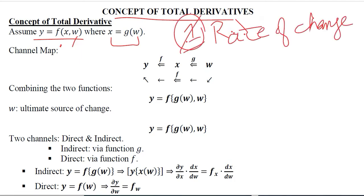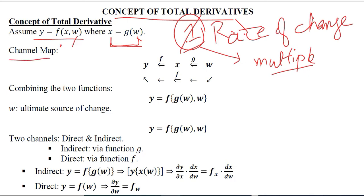There are multiple rates of change. In this case there are two of them because y is dependent upon x and w, and w is determining x — in other words, x is further dependent on w. So let's try to understand this with the help of a channel map in which we will try to understand how various variables are related.